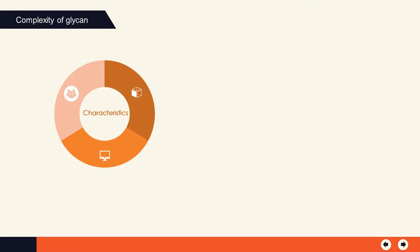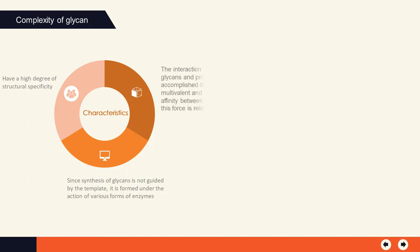Due to the complexity of glycan molecules, glycomics has its own characteristics. First, glycans have a high degree of structural specificity. Second, since the synthesis of glycans is not guided by a template, it is formed under the action of various enzymes, and even in the same glycosylation site of the same kind of molecule, the structure of the carbohydrate chain is also different. In addition, the interaction between glycans and proteins is accomplished through multivalent and intensifying affinity between them, and this force is relatively weak. These characteristics place very high demands on analytical techniques.